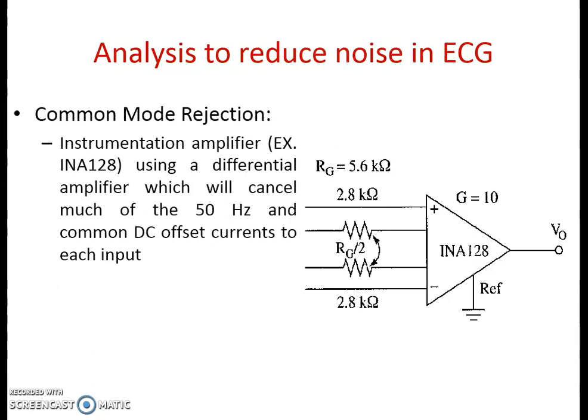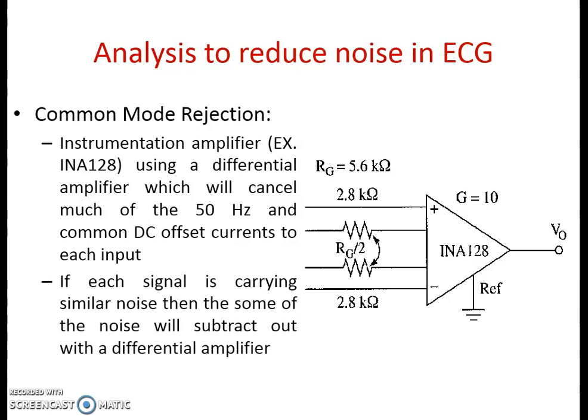By using an instrumentation amplifier which has a high CMRR — specifically we are using the INA128 circuit which gives high CMRR — this helps to reduce the 50 Hz noise as well as the common DC offsets. If each signal is carrying similar noise, the sum of the noise will subtract out with a differential configuration. The instrumentation amplifier generally has two stages: the first stage is known as the buffer stage while the second stage is called the differential amplifier. When the common mode signal appears the same at both terminals of the differential amplifier, it has the capability to reject this common mode signal and cancel this major source of error in the ECG preamplifier.